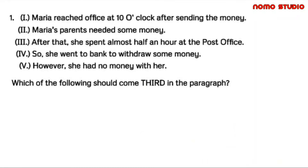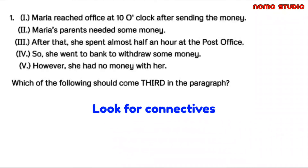The best way to answer is to look for connectives — for example: moreover, meanwhile, after that, so that, although, however, and so on. These connectives are usually not found in the first sentence of a paragraph. Usually they will be in either the second, third, fourth, or maybe the fifth sentence.